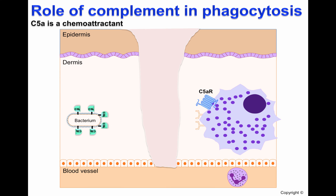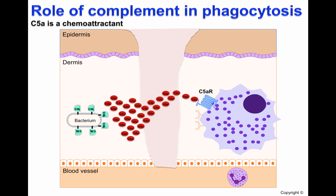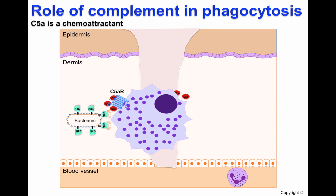Once complement is activated, C5a is produced. As has been shown in previous work on chemotaxis, C5a is an extremely potent chemoattractant. Macrophages possess a C5a receptor and can bind C5a. Once C5a binds, macrophages will follow the C5a gradient to the pathogen, and the CR1 receptors will bind to C3b. Macrophages also possess PRRs, or pathogen recognition receptors, which bind to PAMPs, or pathogen-associated molecular patterns on the pathogen. The interaction between PAMPs and PRRs will activate macrophages.